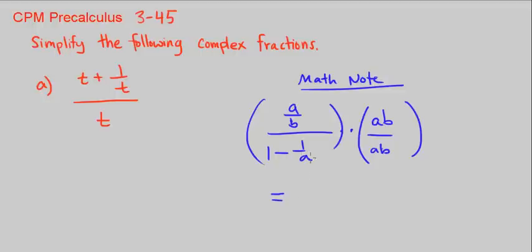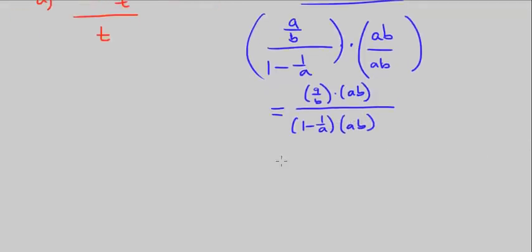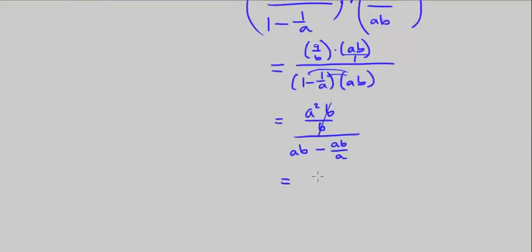When we do that, we get in the numerator A over B times AB — because when you multiply fractions, you just multiply across the numerator and denominator. In the denominator, we get 1 minus 1 over A, times AB. Simplifying that, the numerator becomes A squared times B over B. In the denominator we distribute: AB minus AB over A, which simplifies to AB minus B. The B's cancel in the numerator giving A squared, and the A's cancel in the denominator. So A squared over AB minus B is the simplified version.